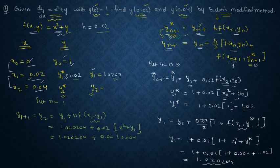So y₁ is 1.0204 plus h is 0.02, x₁, y₁ if you expand it x₁² plus y₁. So 1.0204 plus 0.02, x₁² will be 0.02² that means 0.004 plus y₁ which is 1.0202.